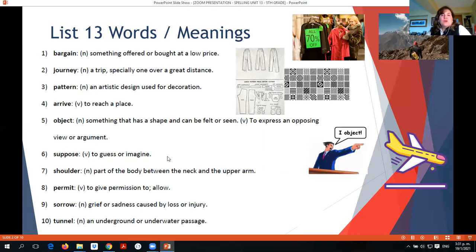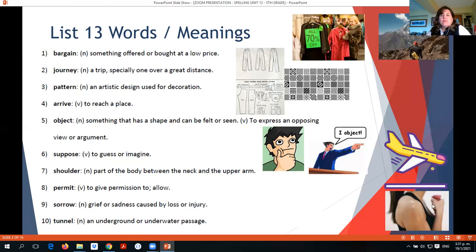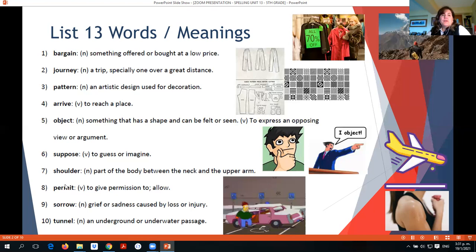Suppose is to guess or to imagine. Shoulder is a part of the body between the neck and the upper arm. This is the shoulder, between the neck and the upper arm. Permit or permit can be a noun or a verb. Here's only the meaning for the verb. So most parking lots, for example, will not permit you to park on special spots that are assigned to handicapped people unless you have a permit on your car that allows you to park there.